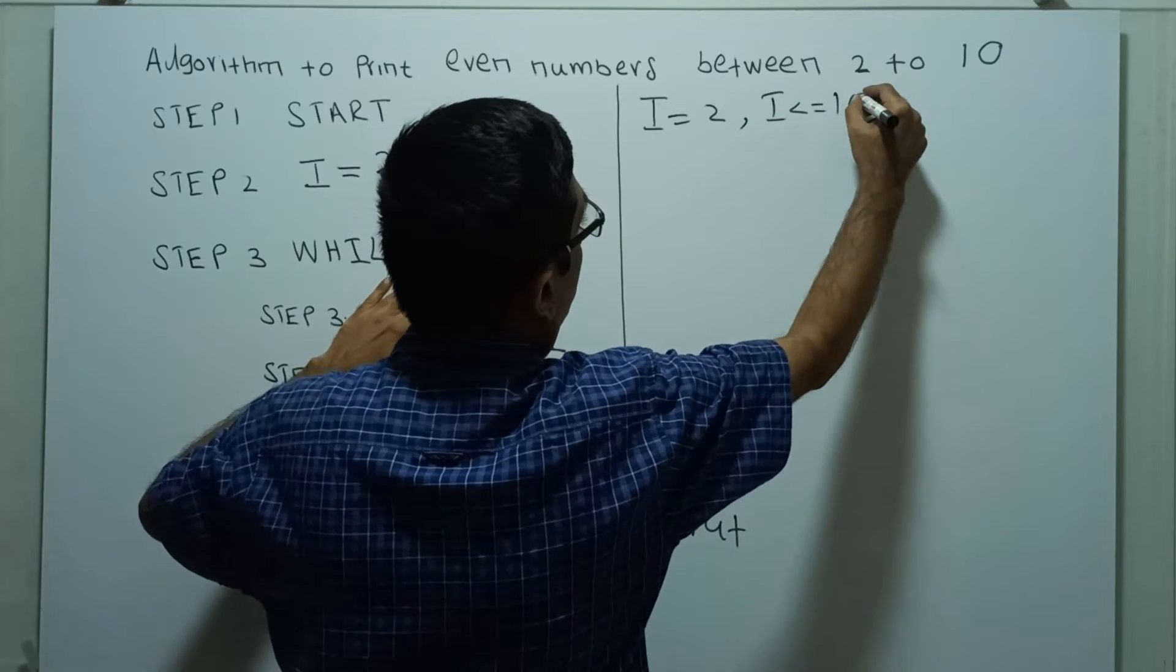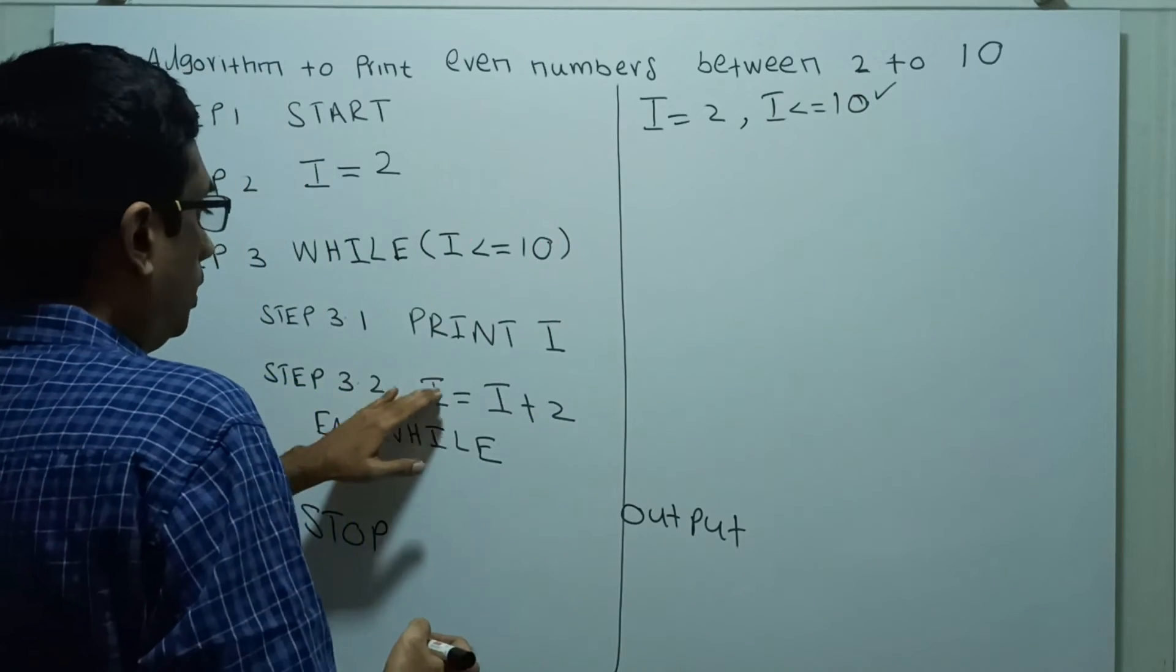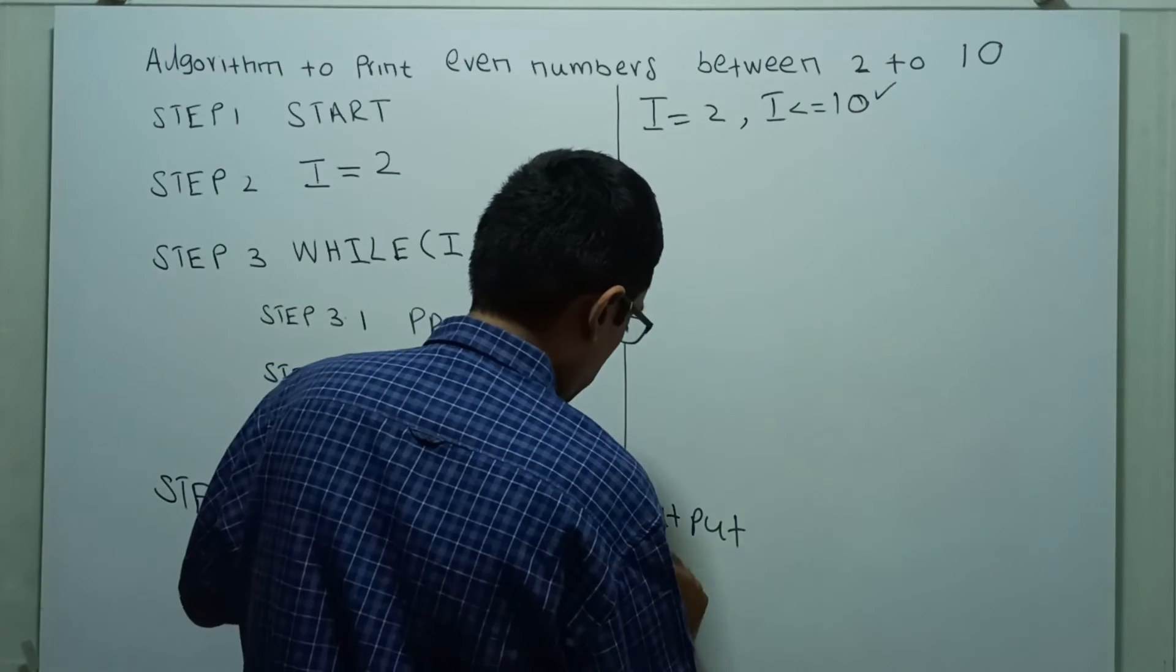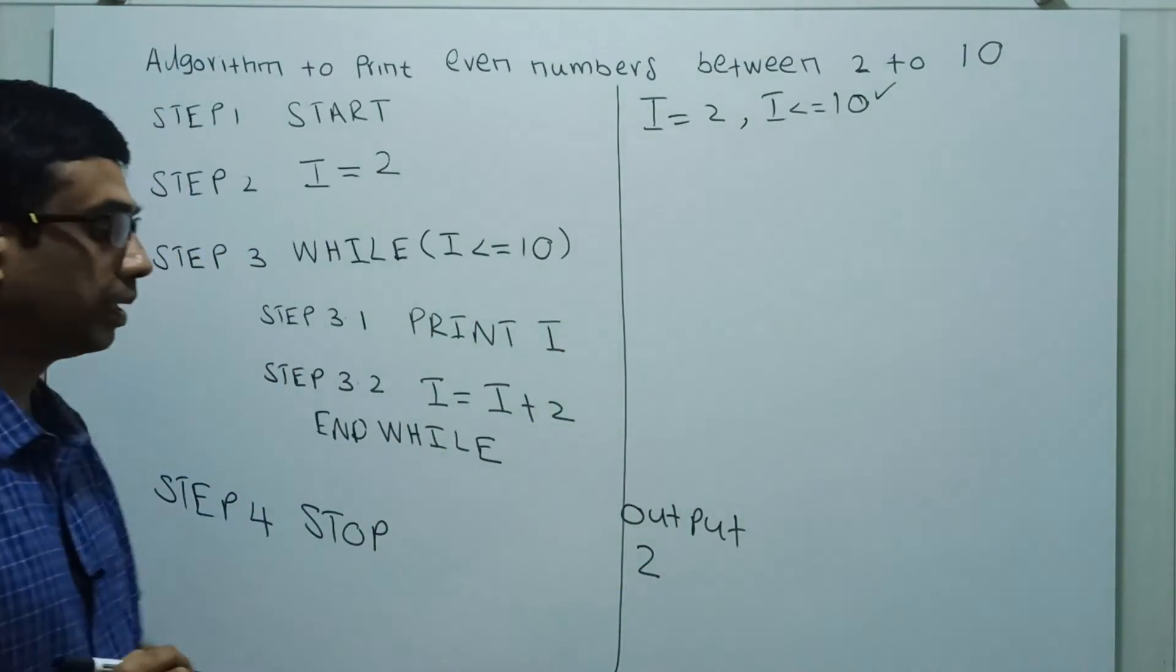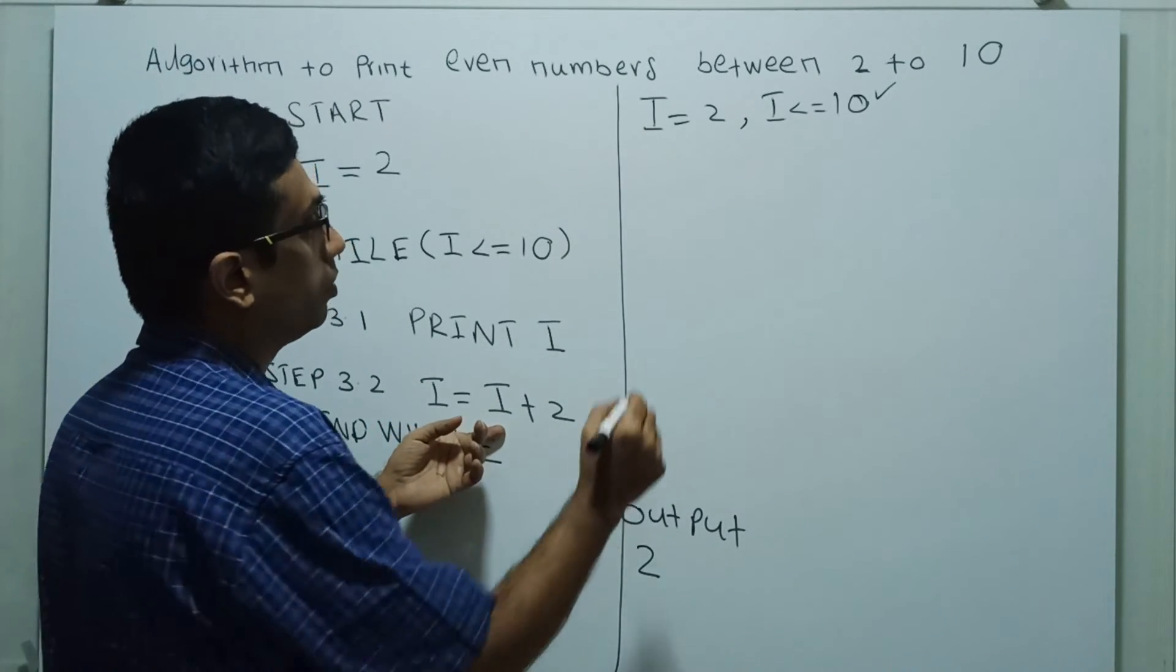2 less than or equal to 10 which is true. Then I will get printed. So 2 will get printed here. I equal to I plus 2. Now I equal to 4.